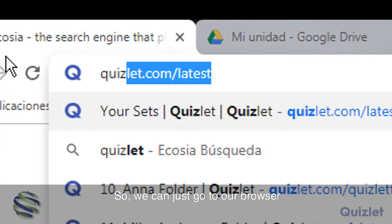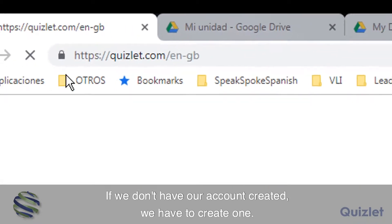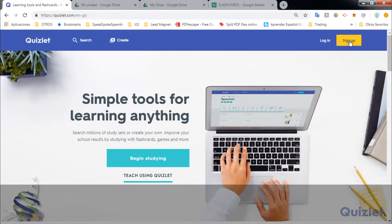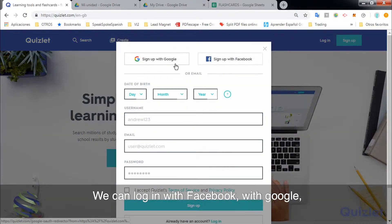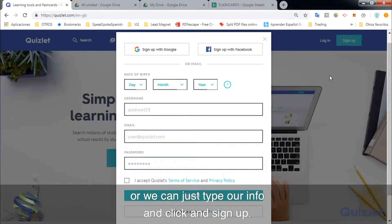So we can just go to our browser and type in Quizlet.com. If we don't have our account created we have to create one. So we have three options. We can log in with Facebook, with Google or we can just type our info and click on sign up.